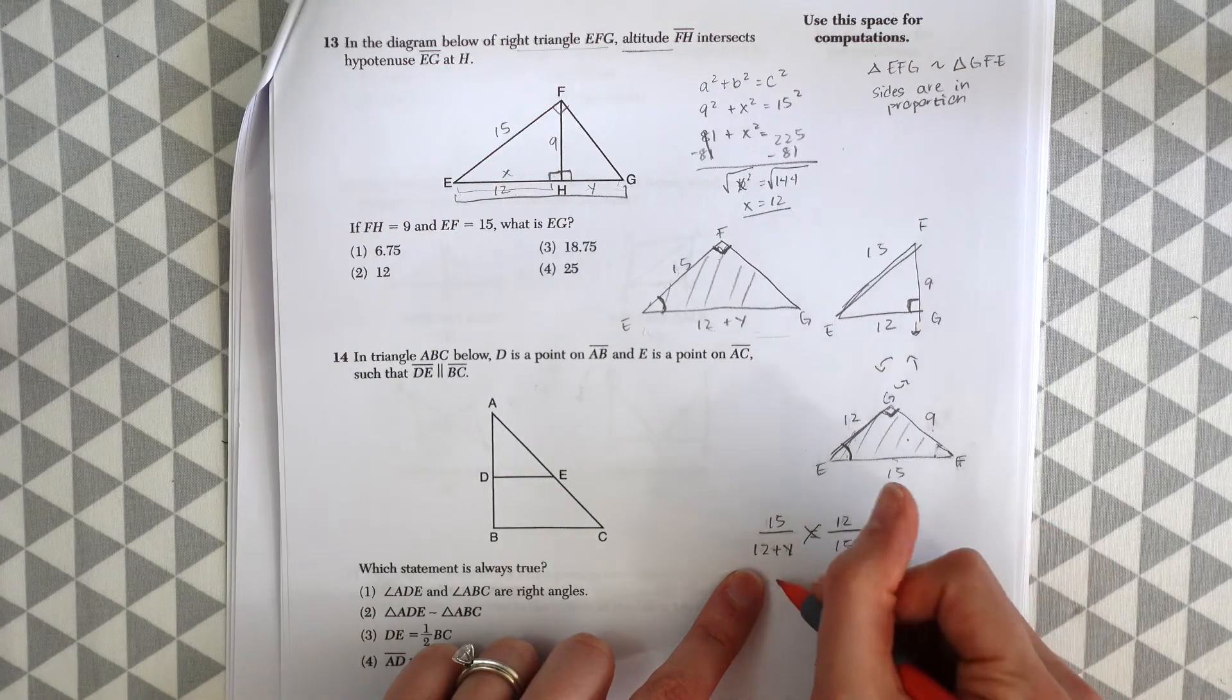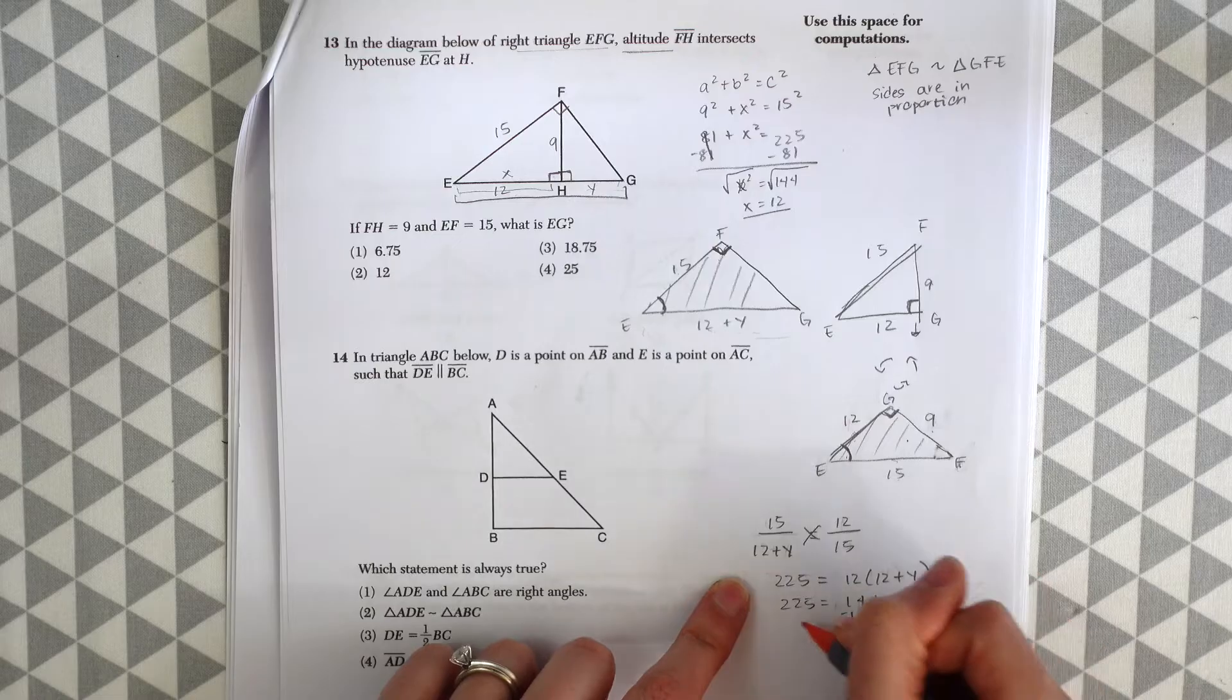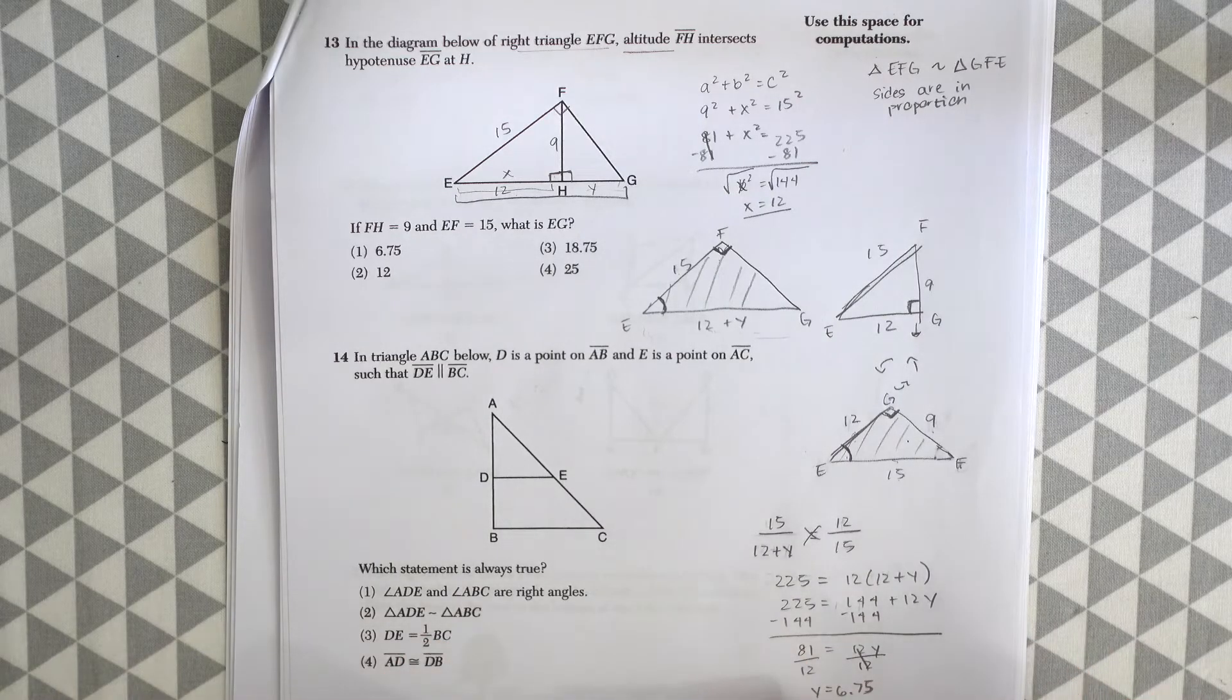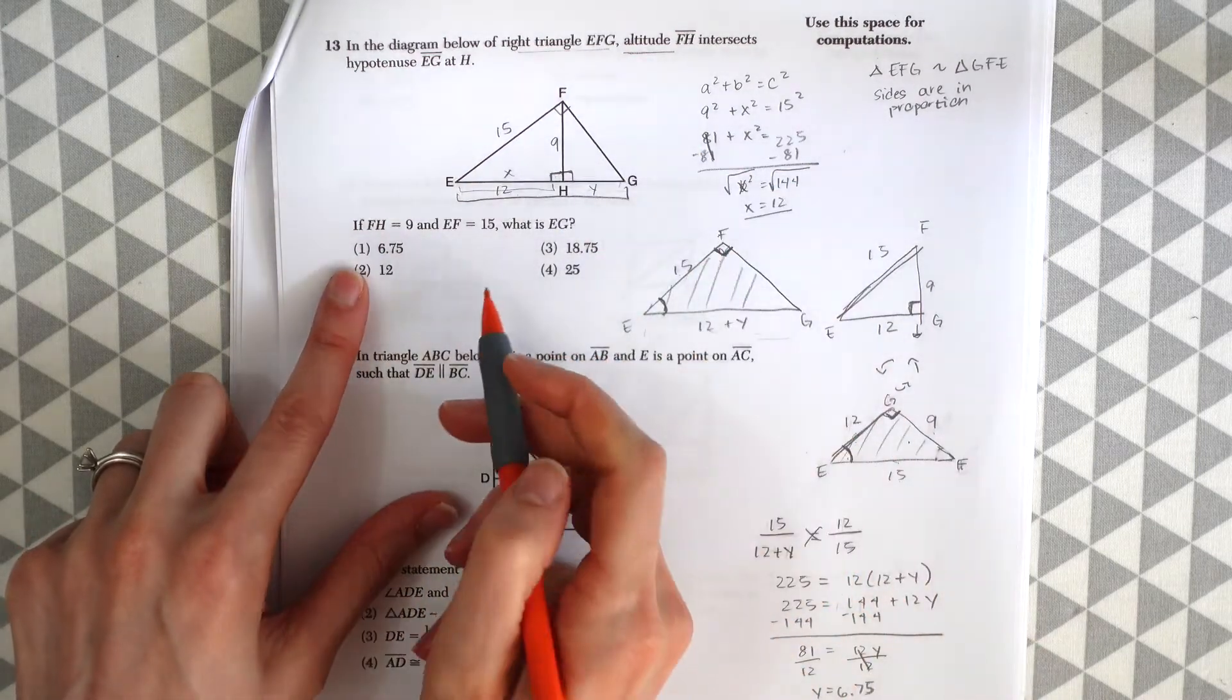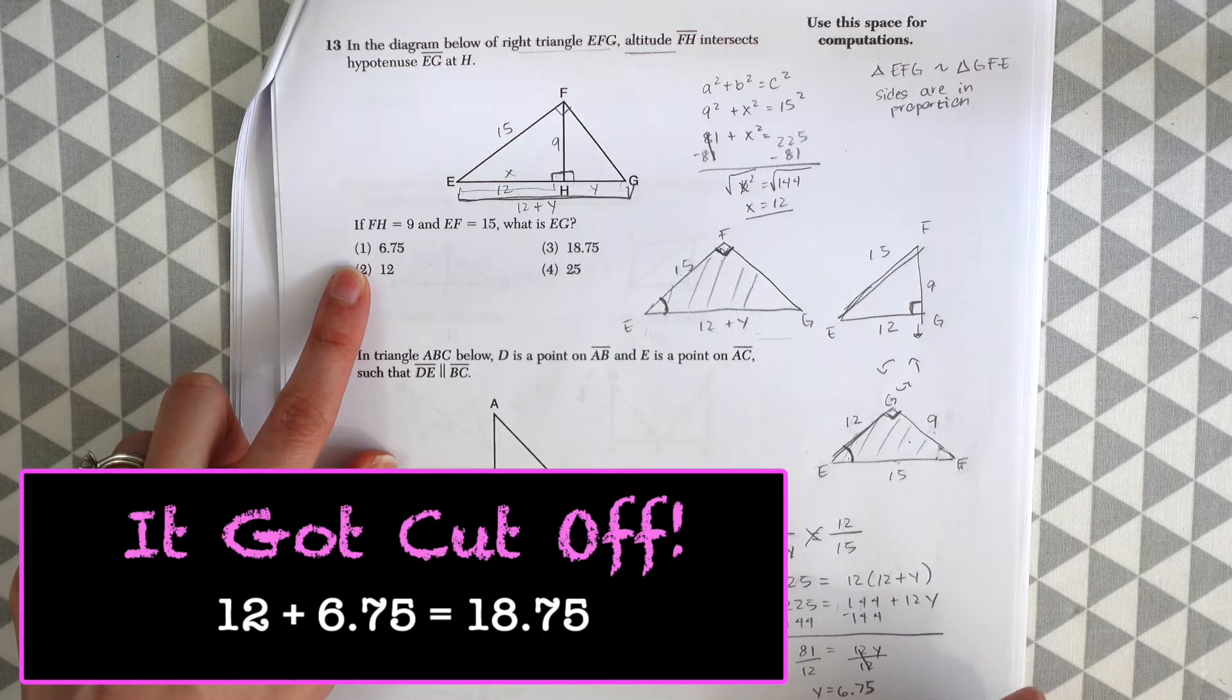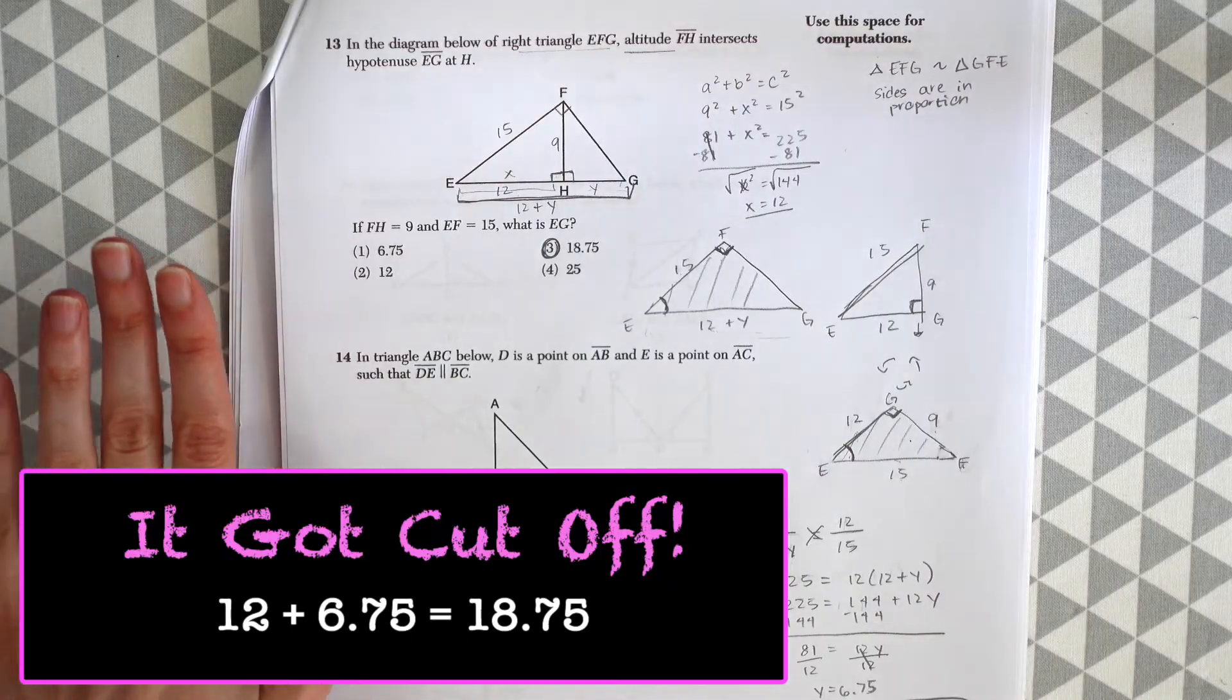So we have 15 times 15, which will give us 225, and then we have 12 times 12 plus Y. So we get a value of 6.75. So again, don't get too excited and circle that first choice because we are not done yet. What they want is the value of EG, so this whole thing, which is 12 plus Y. So now we just need to add 12, and we end up getting 18.75, which is choice three. And that is our answer.